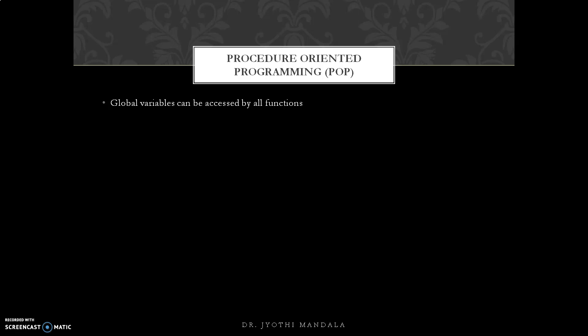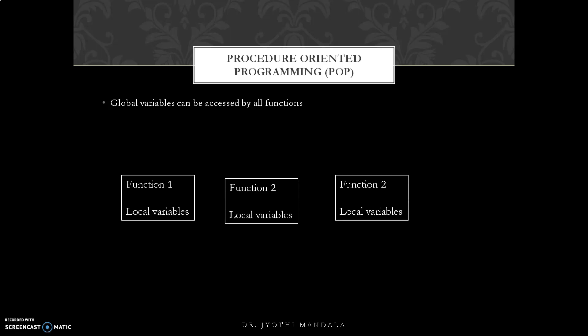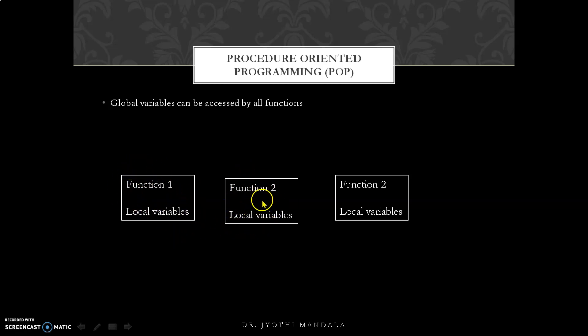In Procedure-Oriented Programming, a variable can be either a global variable or a local variable. Each function has its own variables — those are local variables, accessible only within that function. Function 1's variables are accessed within function 1 only, function 2's variables within function 2 only, and function 3's variables within function 3 only. But if you want a common variable accessible by all three functions, that is referred to as a global variable.